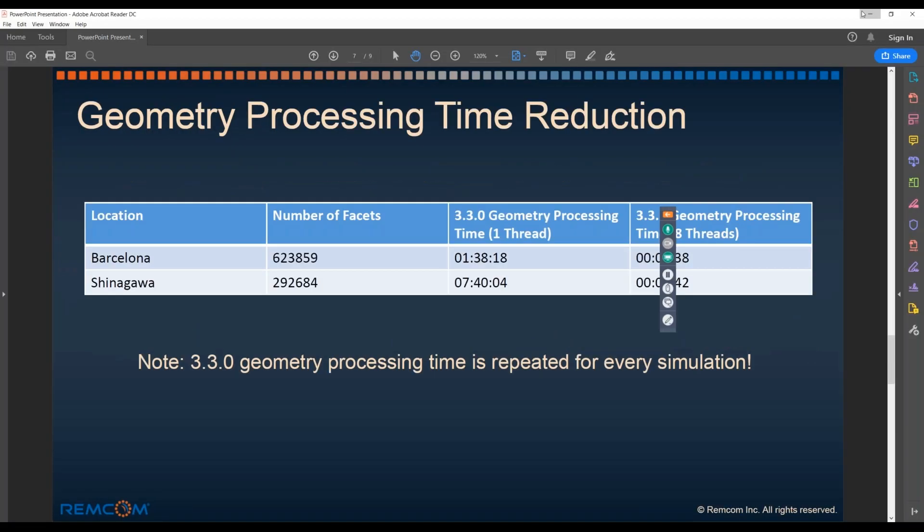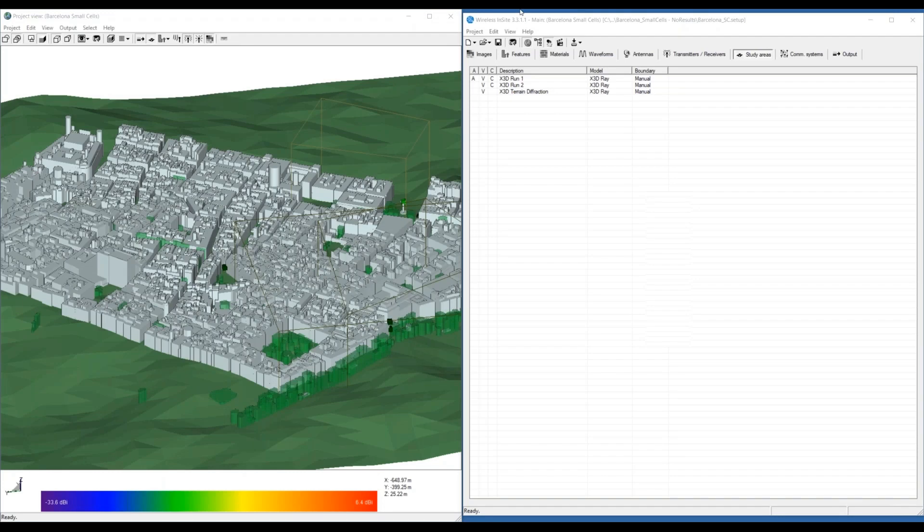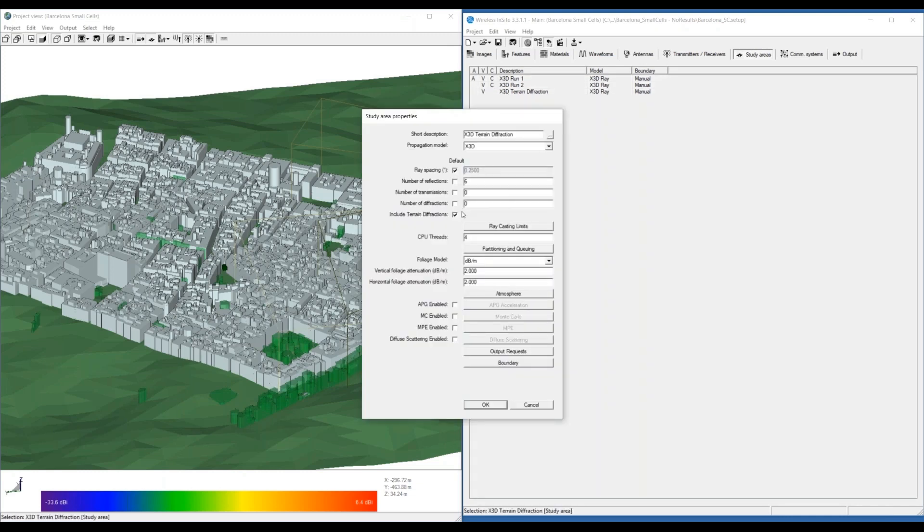Now, I do have a demo open here. This is Wireless InSite 3.3.1. This is a version of the Barcelona geometry I spoke about. You can see here on the study area window, the cache is available for these two study areas. Not on the third one, however, because this study area has terrain diffractions enabled, and the cache has not yet been built for them.